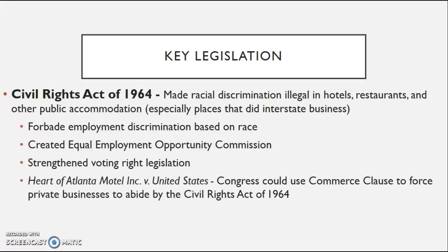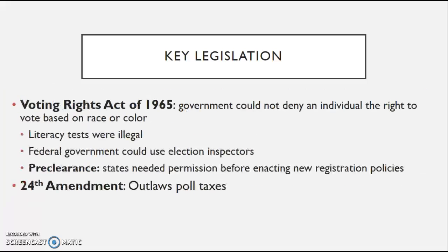Key legislation passed during the Civil Rights Movement includes the Civil Rights Act of 1964, making racial discrimination illegal for businesses. The Supreme Court justified this through the Commerce Clause — since travelers come from out of state, Congress called that interstate commerce. The Civil Rights Act also strengthened voter rights legislation, forbade employment discrimination based on race, and created a special bureaucracy called the Equal Employment Opportunity Commission to ensure there wasn't racist discrimination in hiring practices.